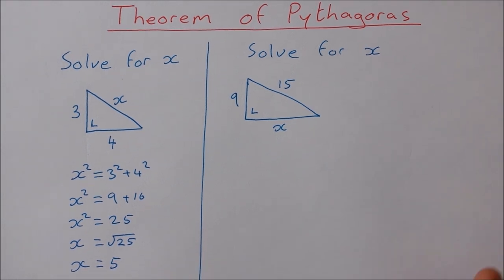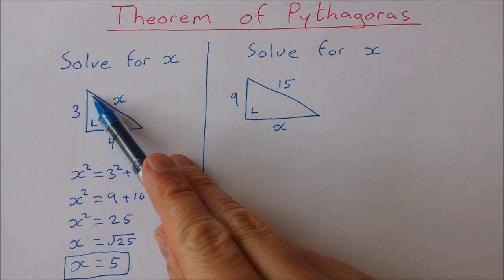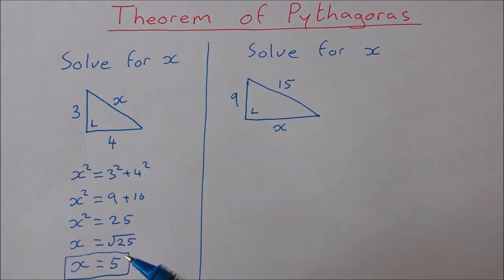Now always remember when we're dealing with triangles here and the theorem of Pythagoras we only ever take the positive value for the square root. We don't take plus and minus 5. We just take plus 5 because it doesn't make any sense to have a length of minus 5. We can only have a length of 5.